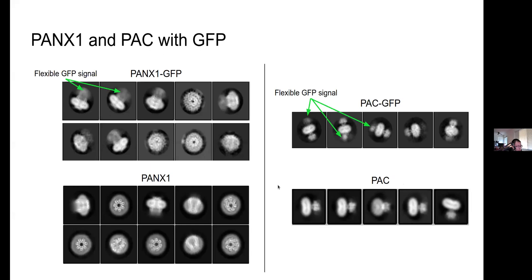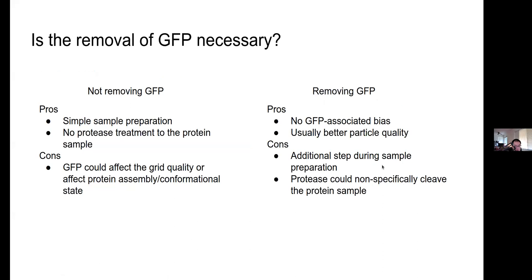The pros of keeping GFP are that it saves time and resources for proteins not affected by its presence. However, for proteins negatively affected by GFP signal, it is very important to completely cleave it. Some proteases may have non-specific activity and could digest the protein at other locations — in that case, it may be necessary to use another protease that avoids non-specific cleavage of the target protein.